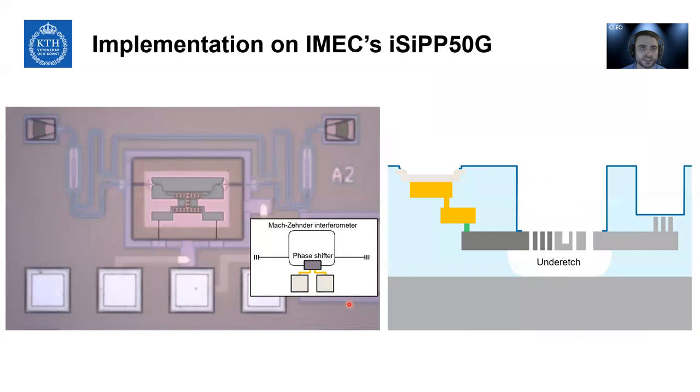So we implemented it now on IMEC's iSiPP50G, which is a silicon photonics platform in Europe, in Belgium, and so yeah, first a few advantages of that, we had access to all high-standard PDK components, grating couplers, MMI splitters, low-loss waveguides, different layers of metal connection with low resistance, and even doping up to the device layer of the movable actuator. So for testing, we add a phase shifter inside a Mach-Zehnder interferometer.